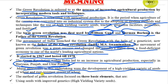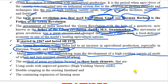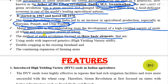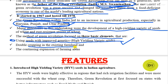The green revolution focused on three basic elements: number one, using seeds with improved genetics, meaning high yielding variety seeds; number two, double cropping in the existing farmland; and number three, the continuing expansion of farming areas. These three form the main basic elements of green revolution.